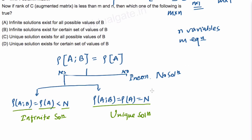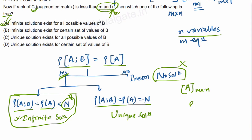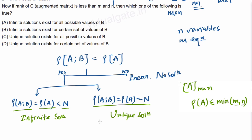We cannot have that case because from the concept of rank we know that the rank can never be greater than the minimum of m and n. If we have a matrix A of order m×n, then the rank of A will be less than or equal to the minimum of m and n. So we do not have a third condition where the rank could be greater than n.